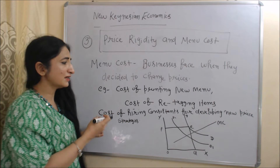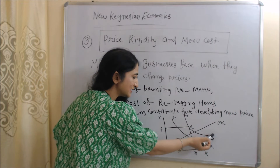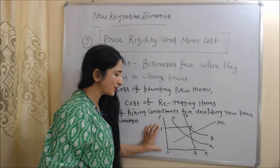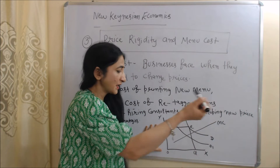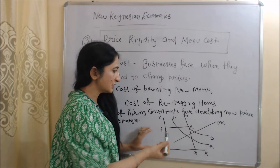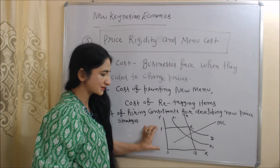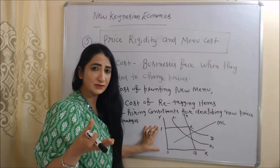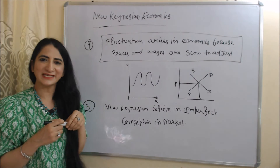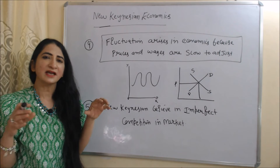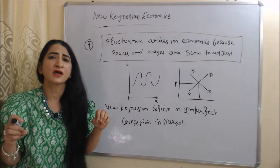In this diagram, E is the initial equilibrium point, DD is the initial demand curve, OP is the initial price, and MC is the menu cost. You can see demand has reduced from DD to DD1, but prices remain the same because businesses are not able to reduce prices due to menu cost.